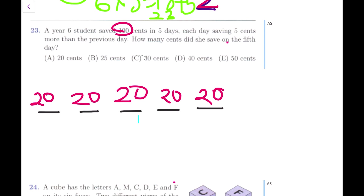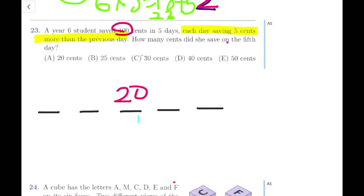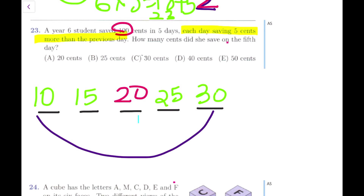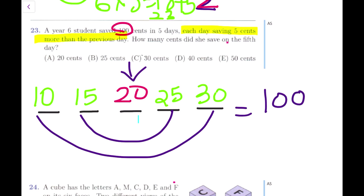She is not saving the equal amount - each day she's saving 5 cents more than the previous day. So 20 is our average. The sequence goes 10, 15, 20, 25, 30. Let's verify: 30 and 10 makes 40, same as 20 and 20; 15 and 25 both add to 40. So 40 plus 40 plus 20 is 100 cents - it works, and they increase in steps of 5. The question asks how many cents she saves on the 5th day - that's the last value, 30 cents.